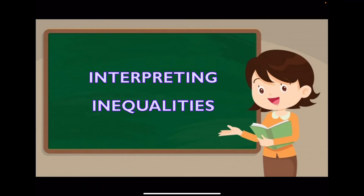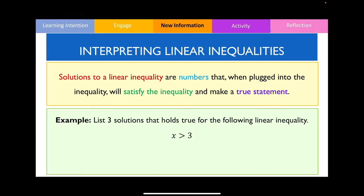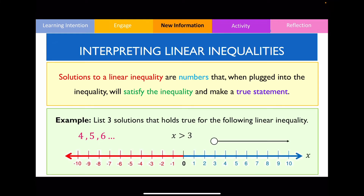The next thing I want to go through is interpreting inequalities. Solutions to a linear inequality can contain multiple values that when plugged in will satisfy the inequality and produce a true statement. In this example: list three solutions that hold true for x > 3. That could be 4, 5, 6. Notice you can't take 3 because 3 is not included. I could also plot this on a number line — any numbers greater than 3.